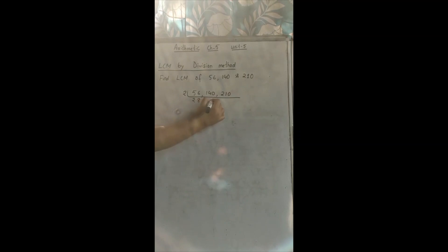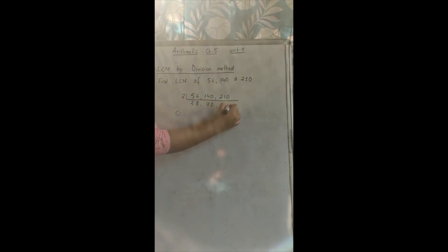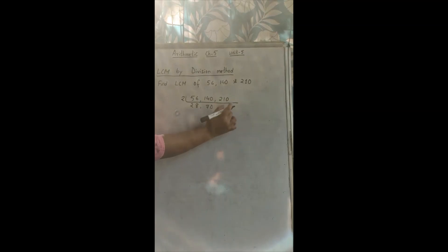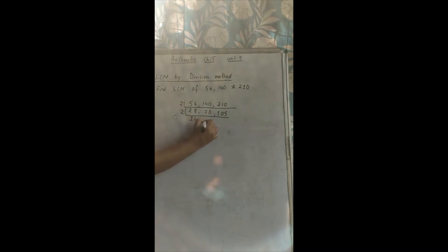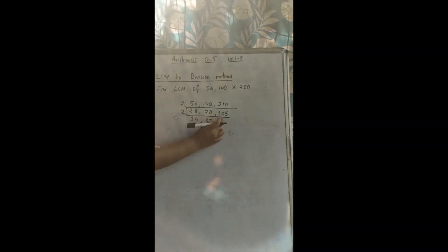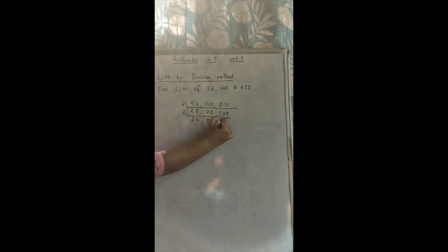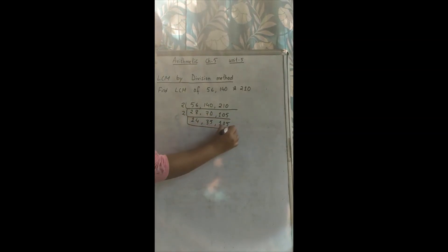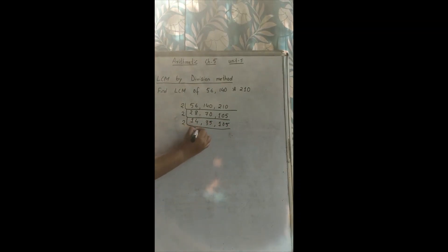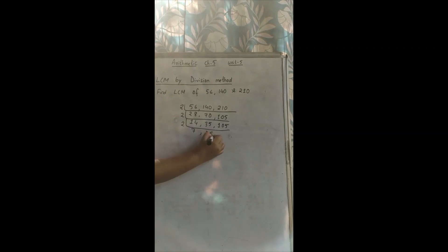Now if you see the numbers, all the numbers go with 2. Divide: 56 ÷ 2 = 28, 140 ÷ 2 = 70, 210 ÷ 2 = 105. Again it goes with 2: 28 ÷ 2 = 14, 70 ÷ 2 = 35. Since 105 is not divisible by 2, we carry forward without dividing it. Again with 2: 14 ÷ 2 = 7. Since 35 is also not divisible by 2, we carry forward.